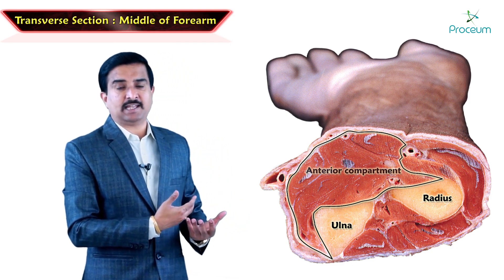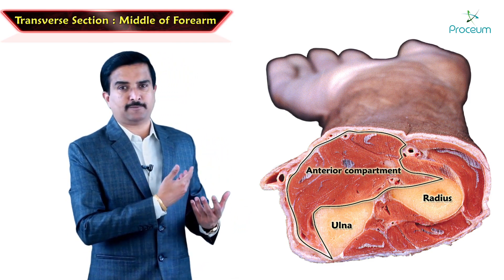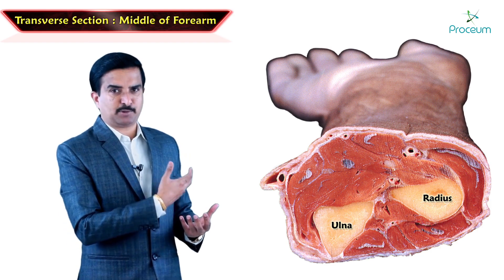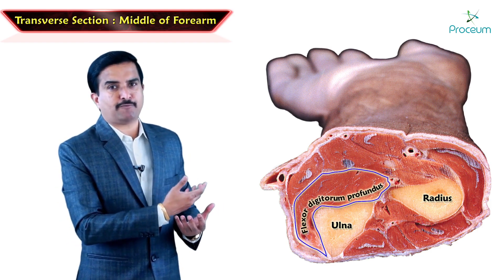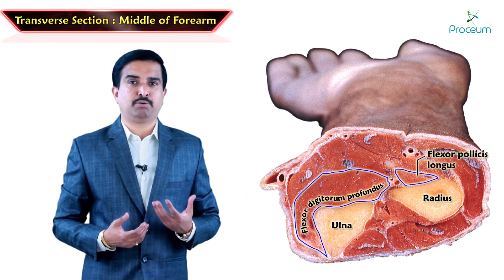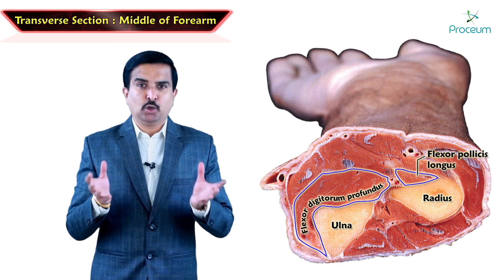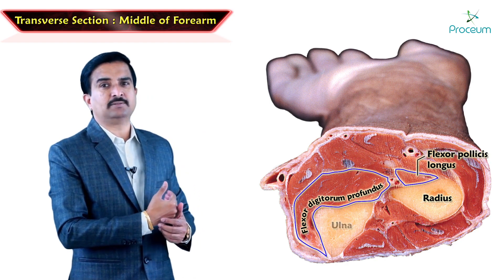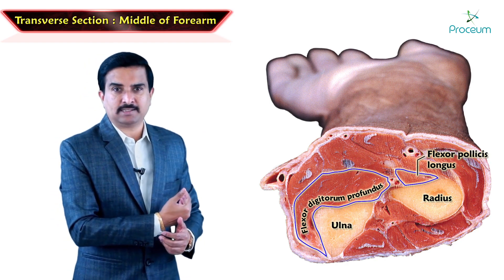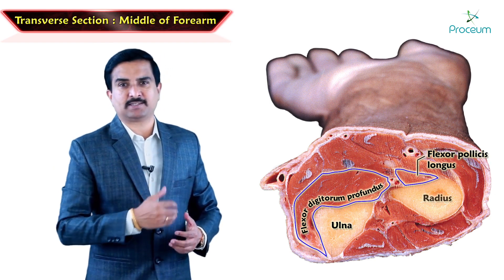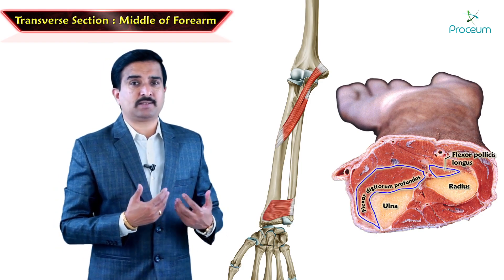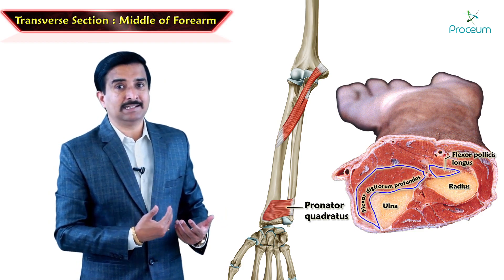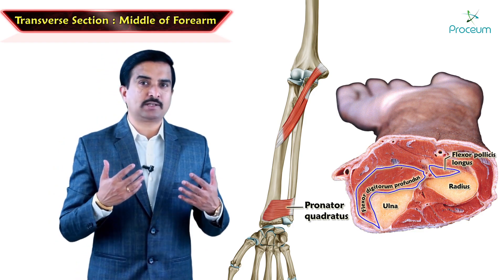The anterior compartment of the forearm is also called the flexor compartment. This compartment shows two deep muscles especially: one is the flexor digitorum profundus and another is the flexor pollicis longus. The flexor digitorum profundus is along the anterior surface of the ulna and the flexor pollicis longus is adherent to the anterior surface of the radius. The pronator quadratus is not seen here because it is present in the distal part of the forearm.